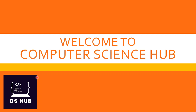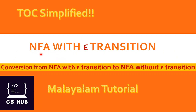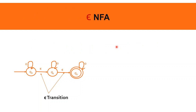Hello everyone, welcome to Computer Science Hub. Today's topic is NFA with epsilon transition — conversion from NFA with epsilon transition to NFA without epsilon transition. Our subject is Theory of Computation. So far we have discussed what is NFA, what is DFA, how to convert NFA into DFA. Now we are discussing the special type of NFA, that is NFA with epsilon transition.